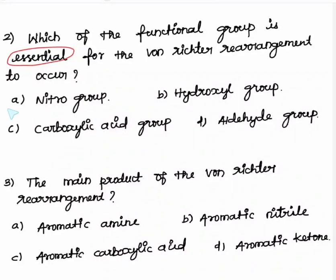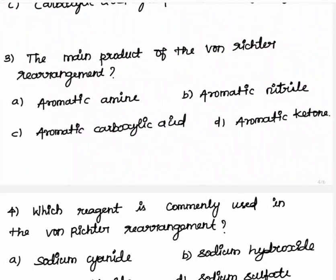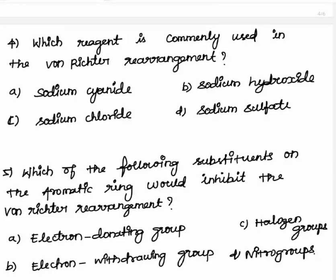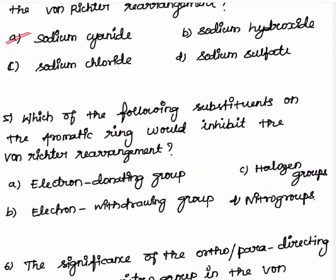Third question: the main product of Von Richter rearrangement is the nitro group converted into carboxylic group. Fourth question: which reagent is commonly used in Von Richter rearrangement? Sodium cyanide — after hydrolysis this is converted into acid. Remaining hydroxide, chlorides, and sulfide are not converted into acid group.